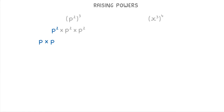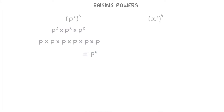And so if we change each of our p squared terms to p times p, we can see that we end up with 6 p's all being multiplied together, which is the same thing as p to the power of 6. So p squared, all cubed, is just p to the power of 6.